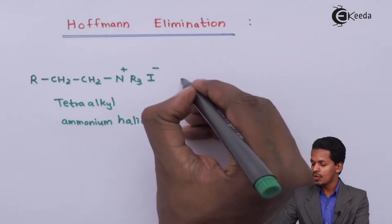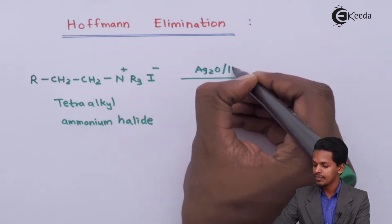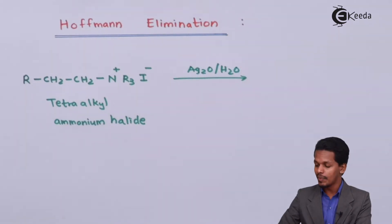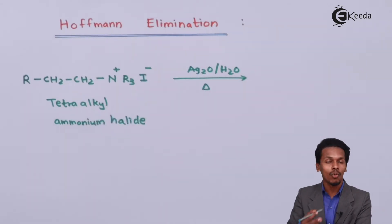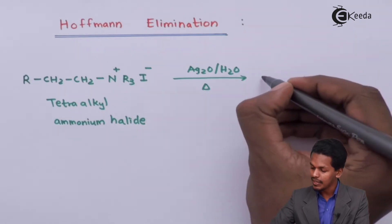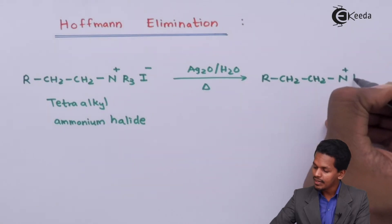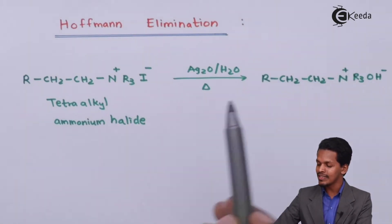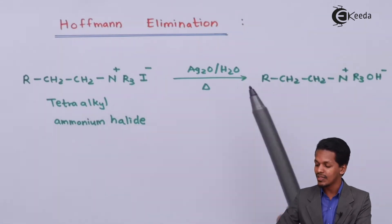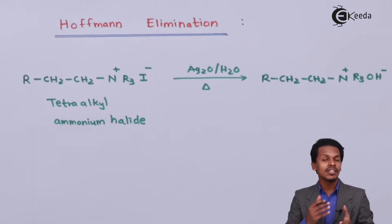The reaction proceeds in the presence of moist Ag₂O (silver oxide), which produces silver hydroxide (AgOH). The iodide is replaced by an OH group, so the product obtained is RCH₂CH₂–N⁺R₃ OH⁻, known as tetraalkyl ammonium hydroxide.